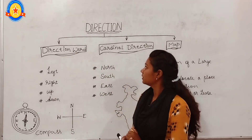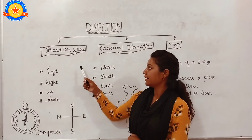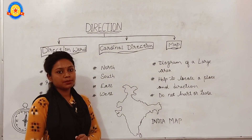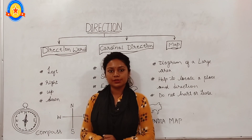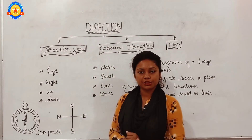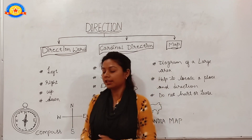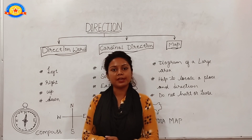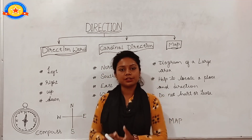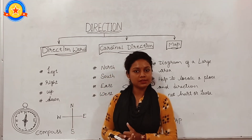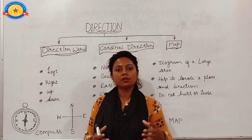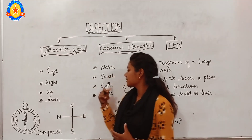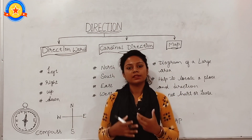So we have talked about direction words, cardinal directions, the compass, and the map. The compass is an instrument to find direction, especially in forests, mountains, and the middle of the sea. I hope you all understood about direction — north, south, east, and west. Thank you.